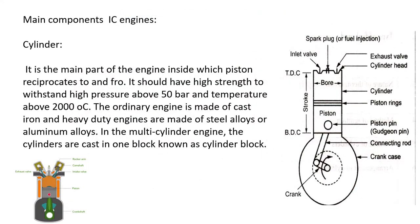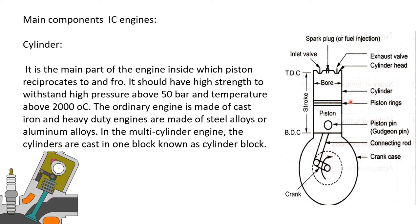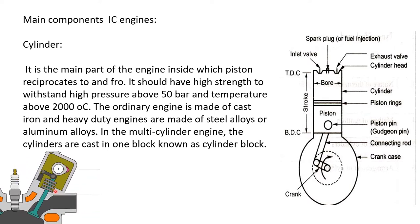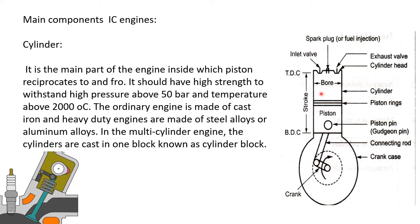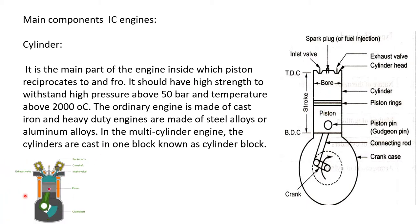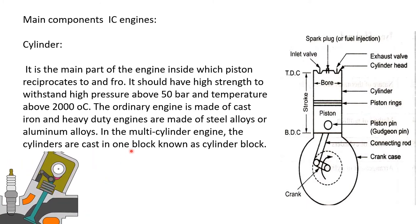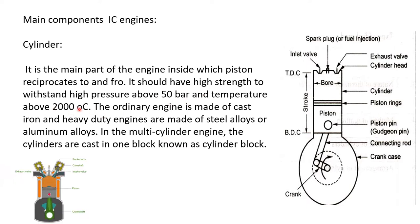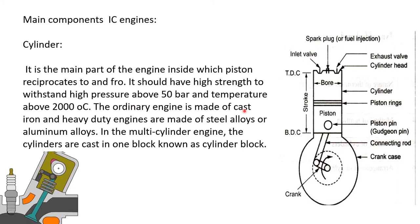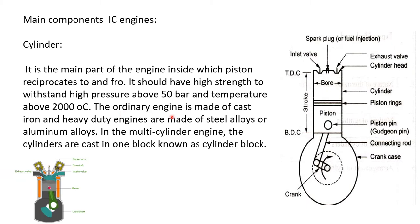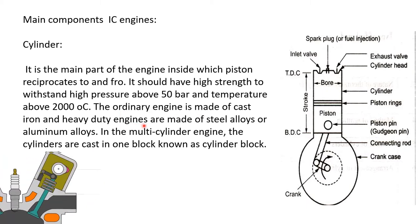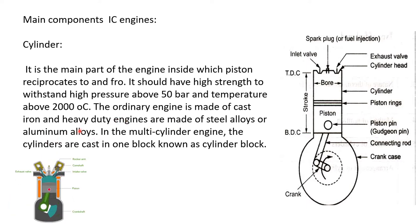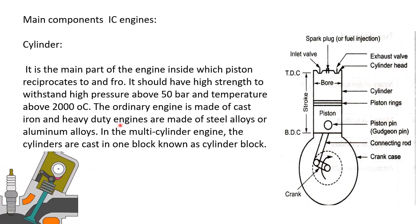The main component of the IC engine is the cylinder. Inside the cylinder, the piston moves and is used to work under high temperature and high pressure — approximately 50 bar pressure and 2000 degrees Celsius. Ordinary engines are made of cast iron and heavy duty engines are made of steel alloy or aluminum alloys.